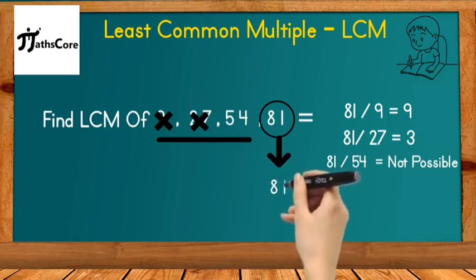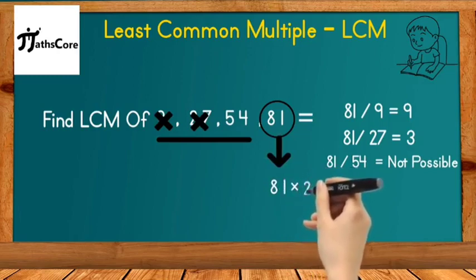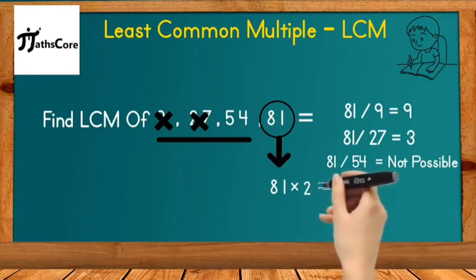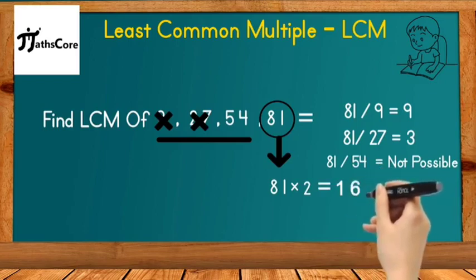In this case, we need to find the next multiple of 81. To find the next multiple of 81, multiply 81 by 2. So 81 multiplied by 2 equals 162.